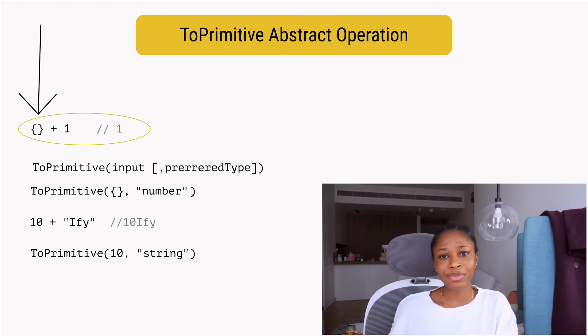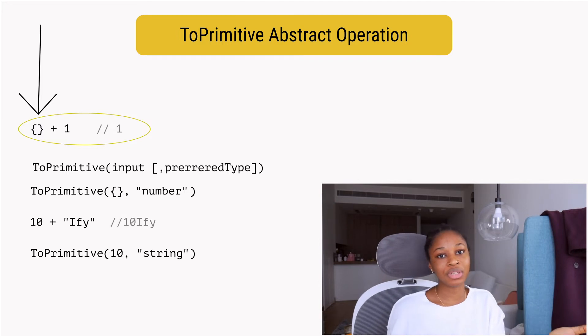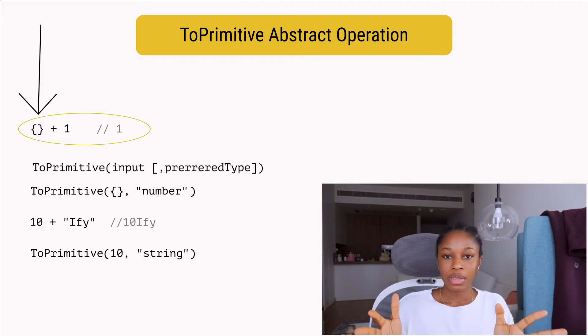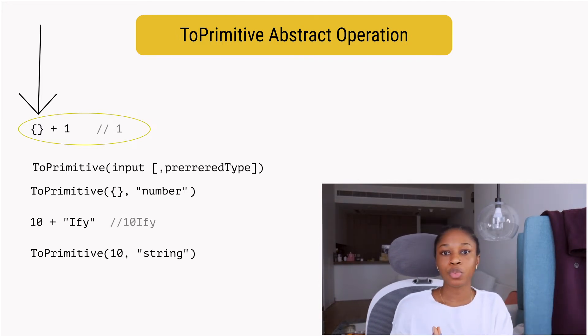The exception is when you're working with dates, in which case the default hint uses string instead of number. Let me now explain how the ToPrimitive algorithm works.